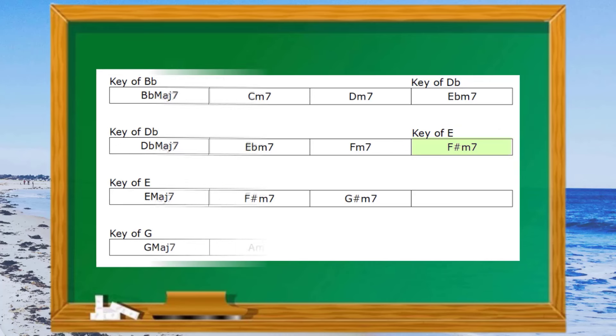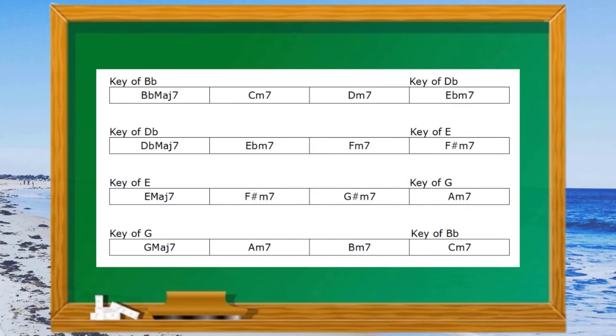Once more, the same process again in the key of E. If we want to modulate to the key of G major, we'd play the first three chords in the traditional manner meaning E major 7, F sharp minor 7, G sharp minor 7. However, when we get to chord 4 instead of playing A major 7, we'd play A minor 7 which is chord 2 in the key of G.